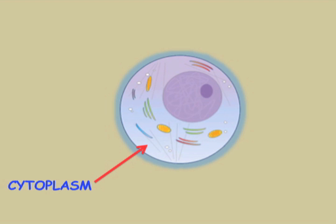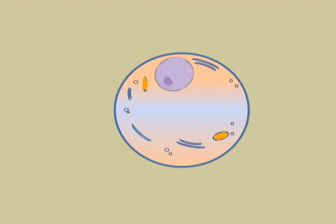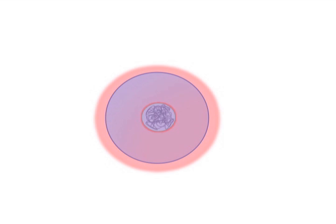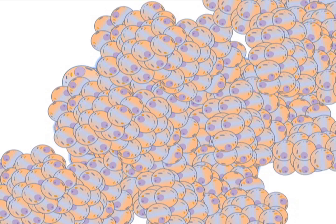The fluid inside the cell, called cytoplasm, reprograms the DNA from the skin cell and allows it to return to a stem cell-like state. This means that the cell divides just like a normal embryo, producing stem cell after stem cell.